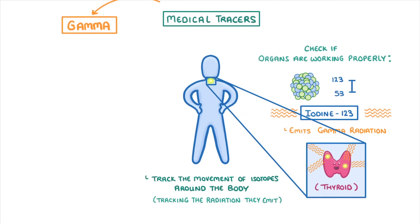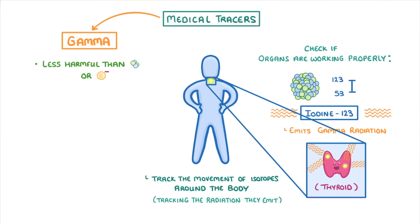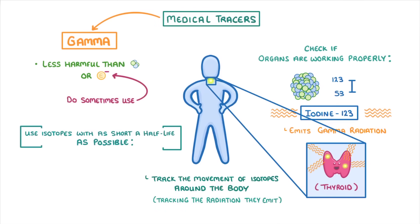We tend to use gamma rays for medical tracers, because they are less harmful than alpha or beta, although we do sometimes use beta radiation. We also want to use isotopes with as short a half-life as possible, so that they only emit radiation for a short period while we take the measurements, and then they stop being harmful.